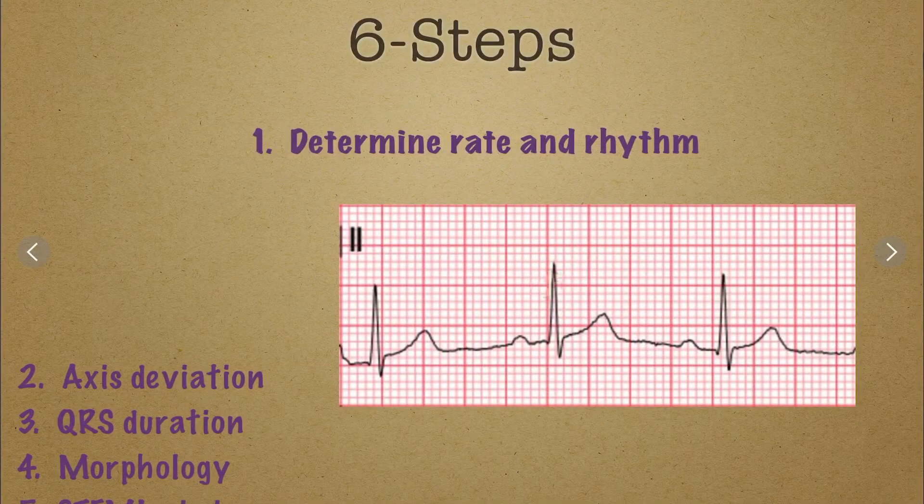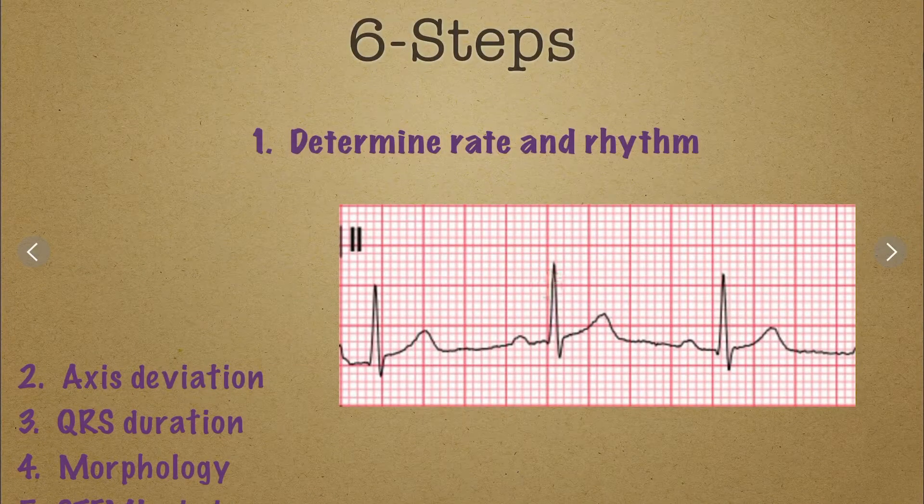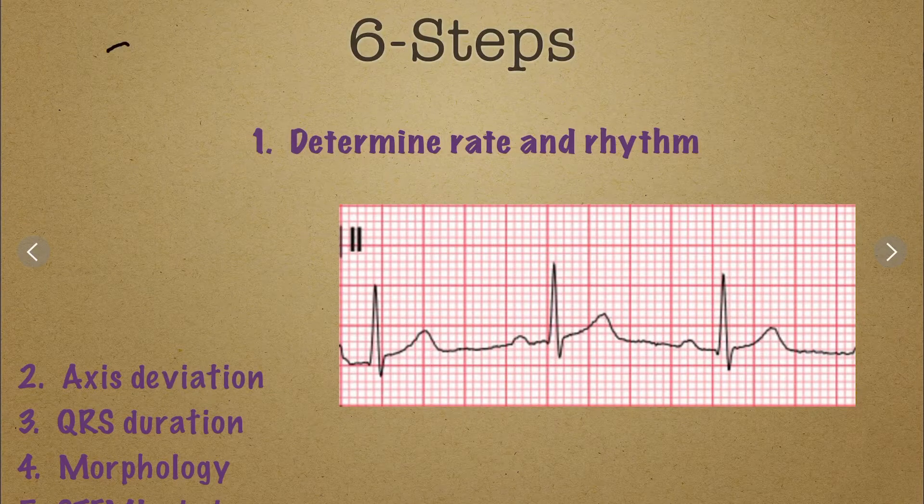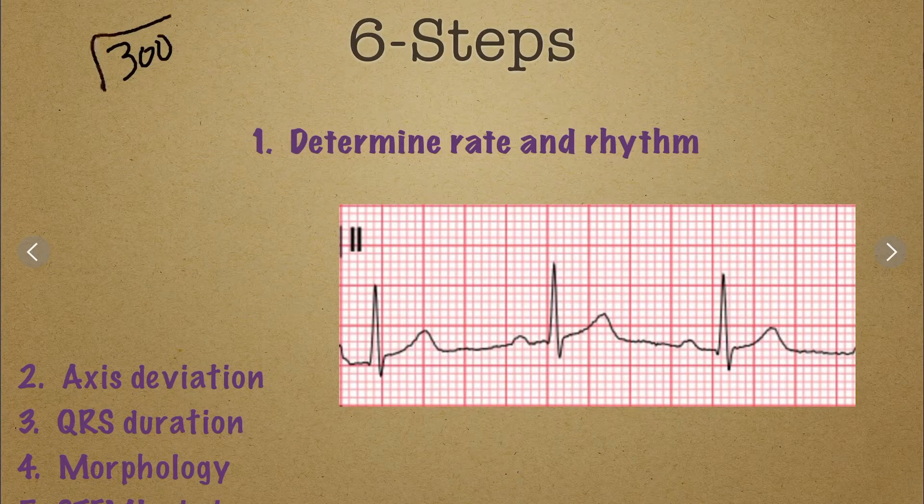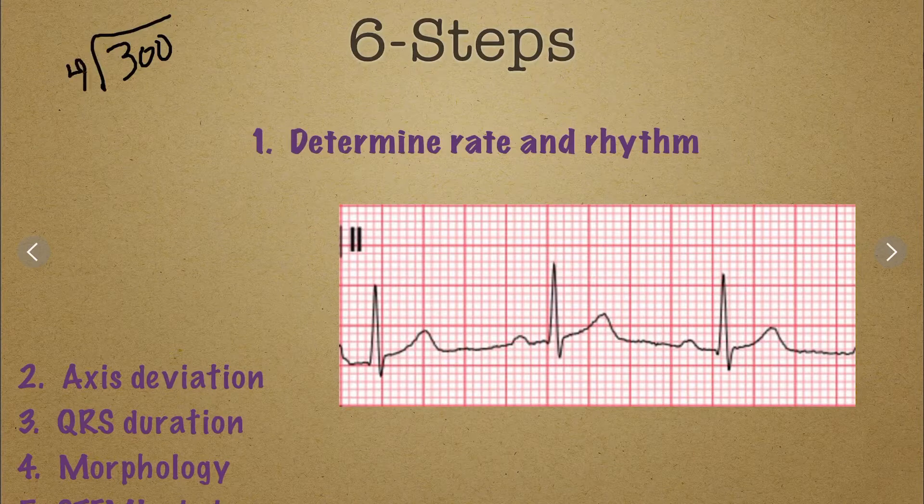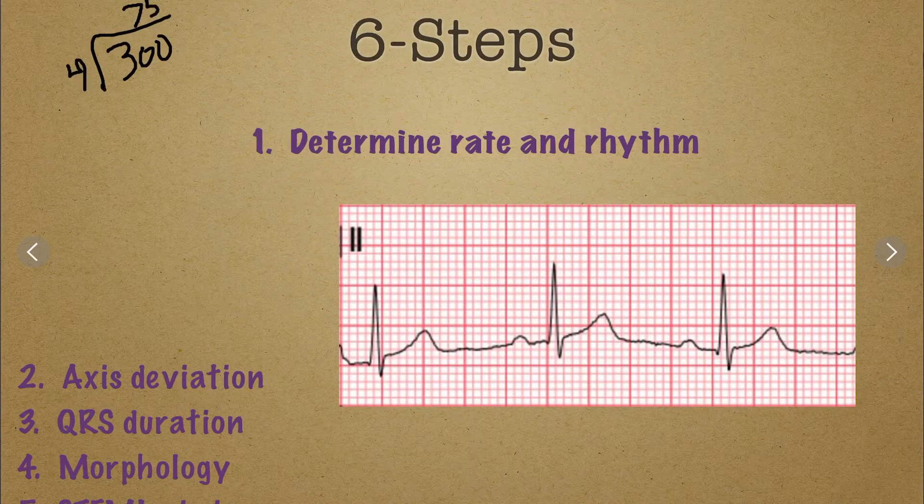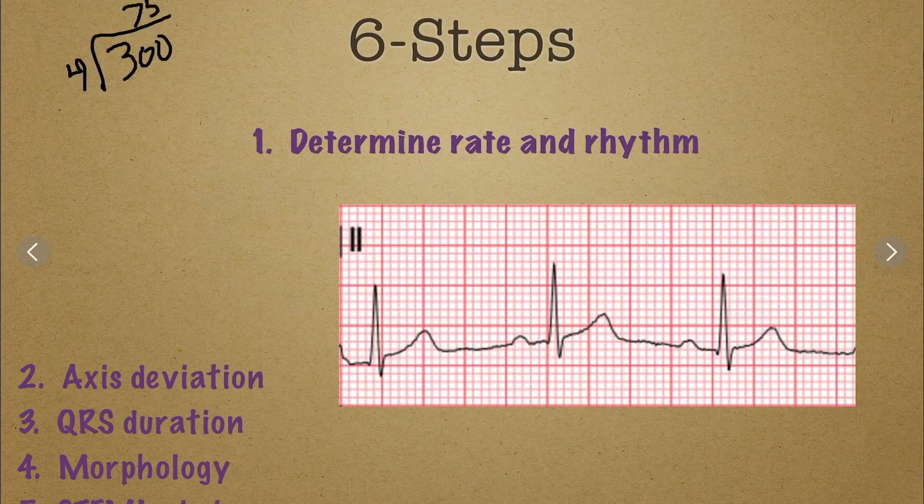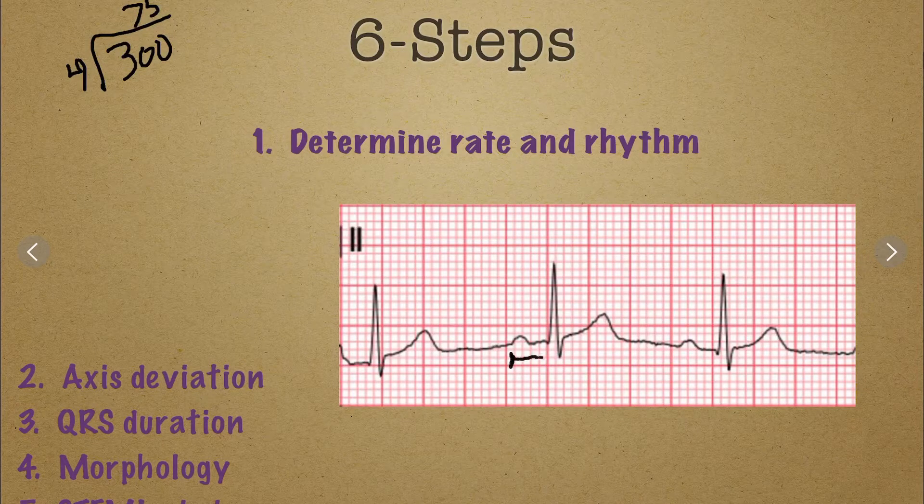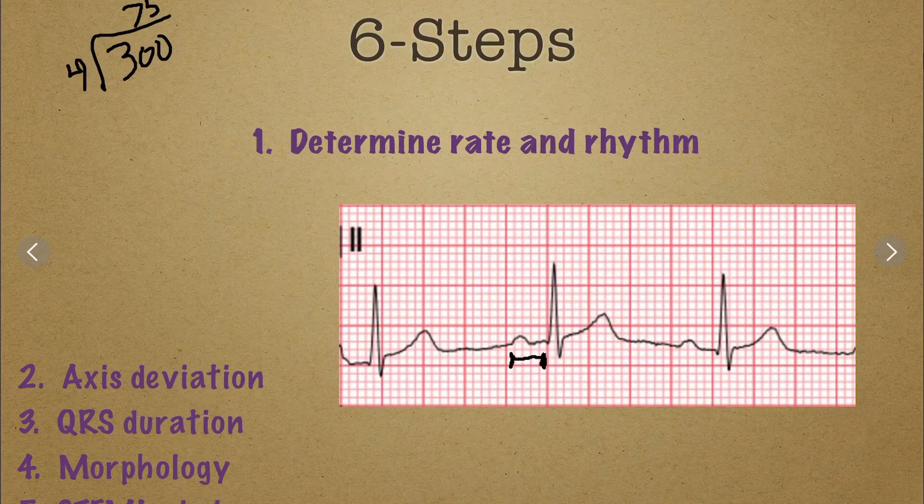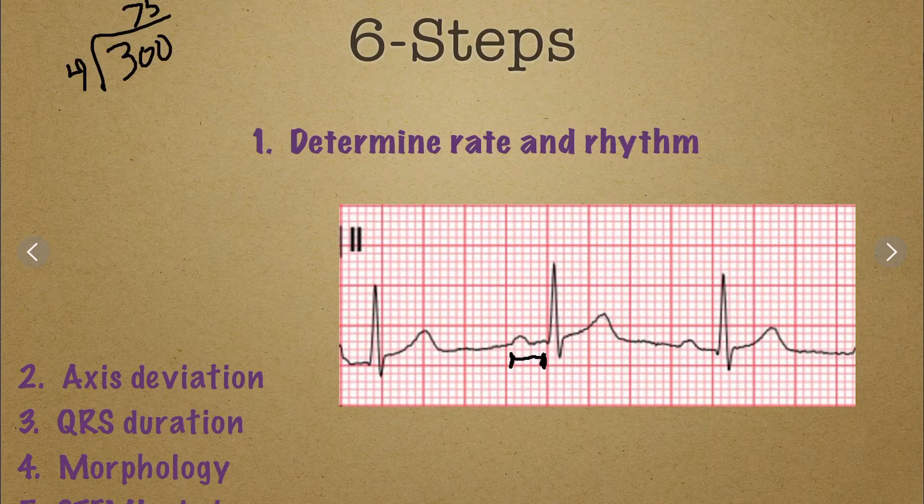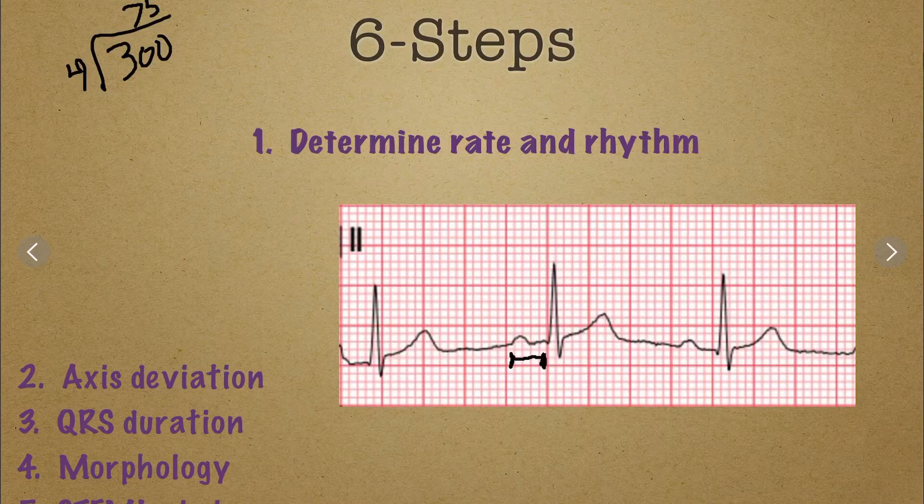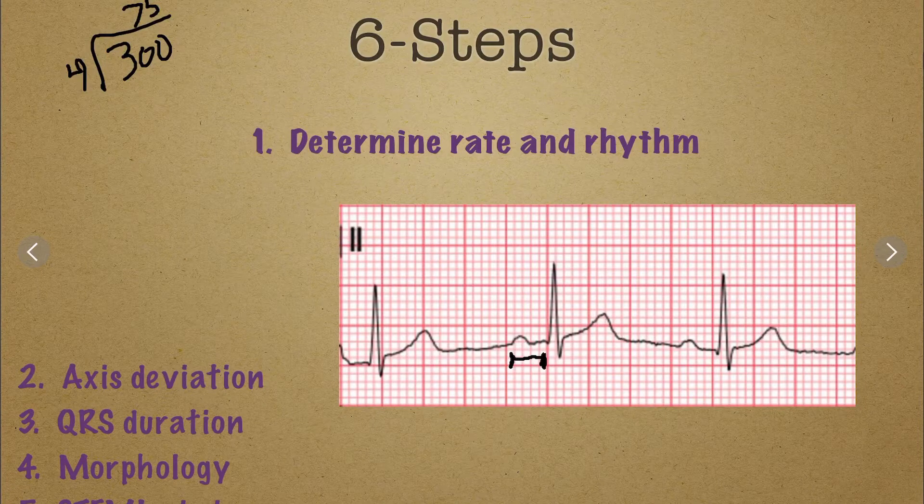two, three, four, so about four, just a little bit over four large boxes. So if I take 300 and divide that by four, I end up with 75. So that's 75 beats per minute. This is probably a three-second strip so it looks about right to me. PR interval looks pretty good. I have one P wave for the QRS. QRS complex looks normal and it's fairly narrow. I would just call this a normal sinus rhythm.